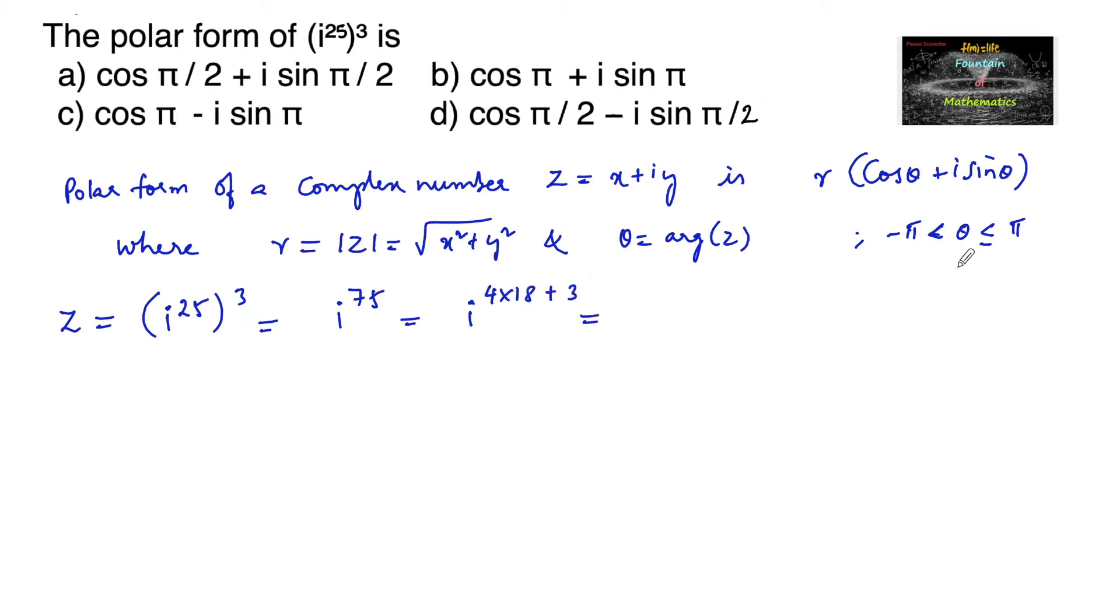So it is in the form of i to the power of 4n plus 3. Since we know that i to the power of 4n is 1, i to the power of 4n plus 1 is i, i to the power of 4n plus 2 is i square that is minus 1, and i to the power of 4n plus 3 is equal to i to the power of 3 that is minus i. So we can write this as minus i.